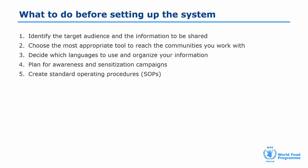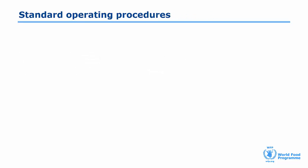Finally, create standard operating procedures for staff involved in the process. For all two-way communication systems, it's very important to have in place standard operating procedures. These should include the roles and responsibilities of staff involved in running the system, such as operators, focal points and relative teams for follow-up.